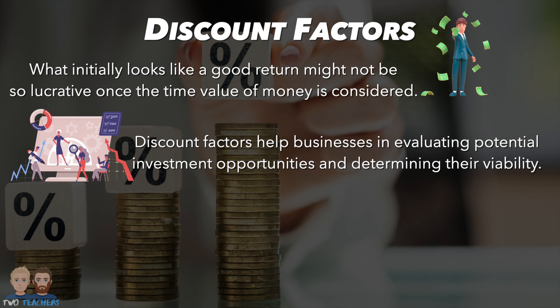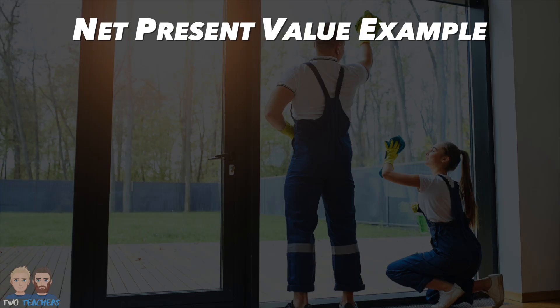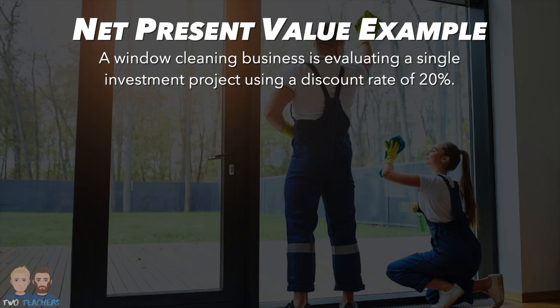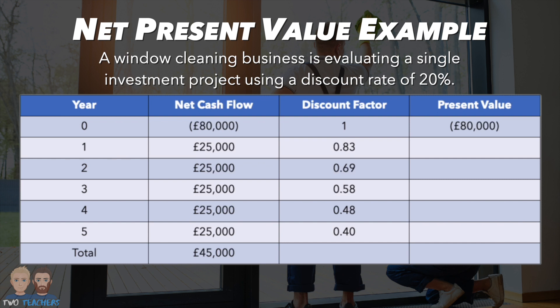Knowing this helps businesses evaluate potential investment opportunities and determine their viability. Net present value also allows for a direct comparison between different investment options, enabling businesses to prioritise and select the most financially attractive projects. Let's explore a scenario where a window cleaning business is evaluating a single investment project using a discount rate of 20%. This investment requires an initial outlay of £80,000 and is expected to generate cash inflows of £25,000 per year for five years. The formula is: cash flow multiplied by the discount factor, which gives you the present value.